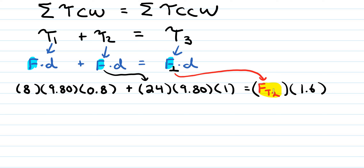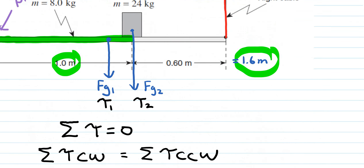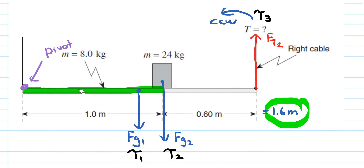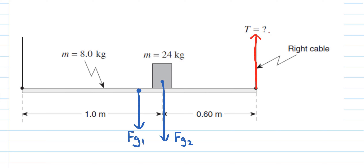We now solve this linear equation for FT2. After completing all calculations, the force in the right-hand cable is 186.2 Newtons.